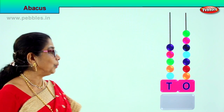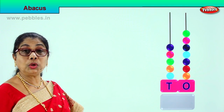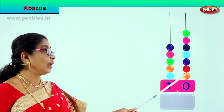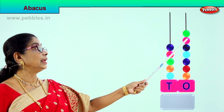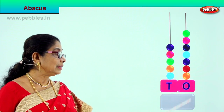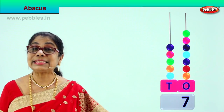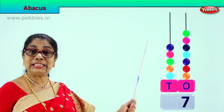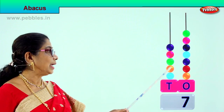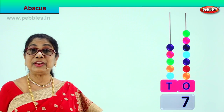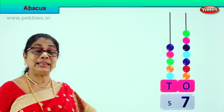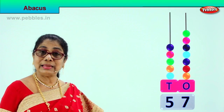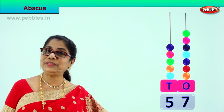Let's count the ones place, all the ones one by one: 1, 2, 3, 4, 5, 6, 7 — so we write seven in the ones place, that is seven ones. Now we go to the tens place: one ten, two tens, three tens, four tens, five tens — there are five beads, each worth ten, so we write number five here. Five tens is fifty and seven ones: fifty-seven.